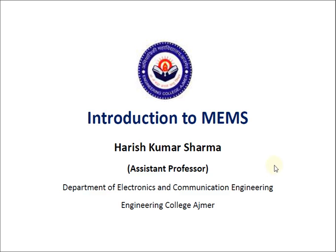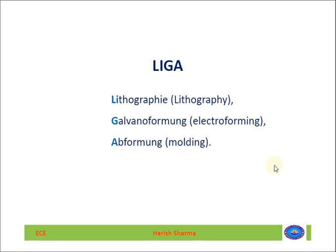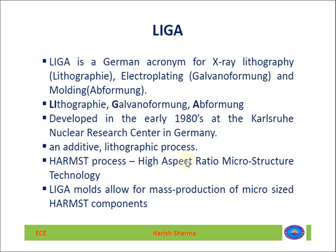Welcome to this lecture. In the previous lecture we discussed MEMS micro manufacturing, covering surface micro machining and bulk micro machining. In this lecture we will discuss the LIGA process. The word LIGA comes from the first letters of German words: lithography, galvanoformung (electroforming process), and abformung (molding process). LIGA is a German acronym for lithography, electroplating, and molding.